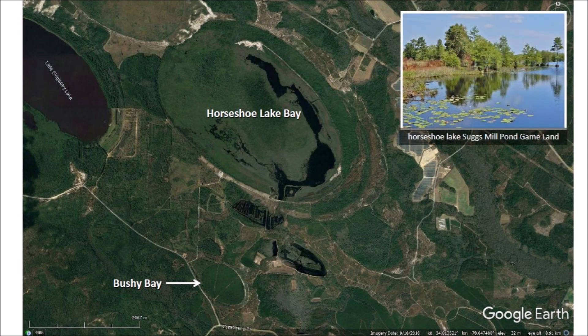Horseshoe Lake is also called Shug's Mill Pond. In 1998, the state of North Carolina purchased approximately 8,000 acres of the Horseshoe Lake natural area. The tract is now managed by the North Carolina Wildlife Resources Commission as the Bladden County Game Land and is open to the public for hiking, fishing, boating, birding, and special permit hunting.